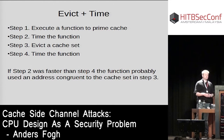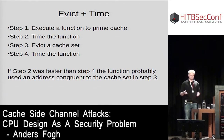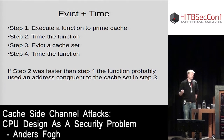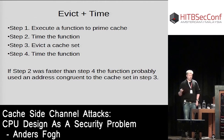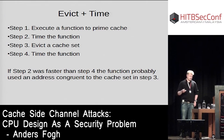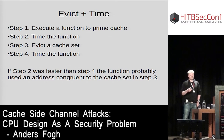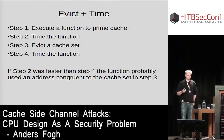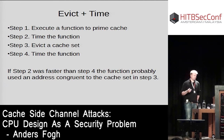Evict+Time works like this: execute a function to set up the cache, then time the same function as a baseline, then evict a cache set you think is interesting, then time the function again. If step two was faster than step four, the function probably used an address congruent to the evicted cache set — meaning in our password example, we would know if the user typed an uppercase letter or not.